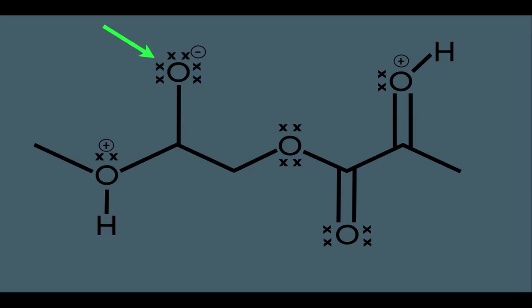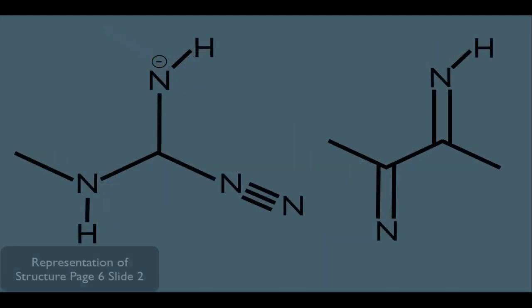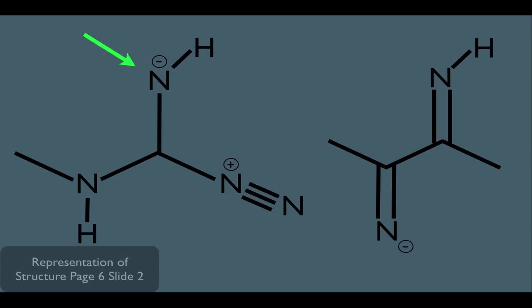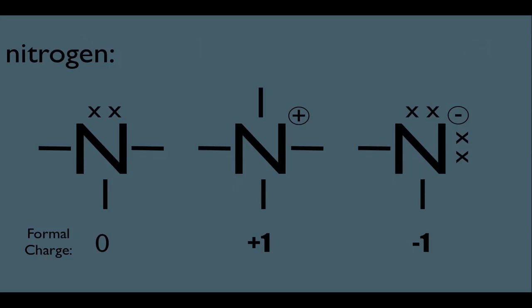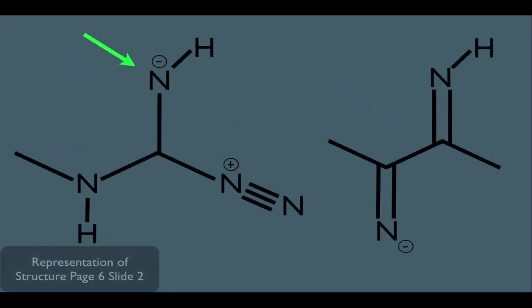Let's look at another example, but let's use nitrogen now. Starting with this nitrogen — notice it has a negative formal charge. When nitrogen has a negative formal charge, that means it has two bonds and two lone pairs of electrons. Going back, we see it already has its two bonds, so all we need to add are the two lone pairs of electrons to complete it.